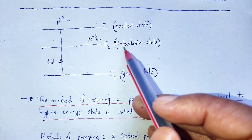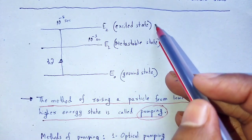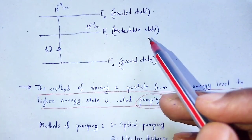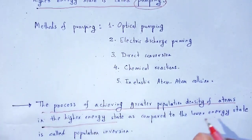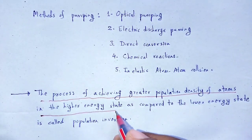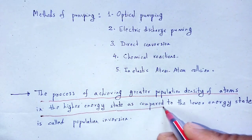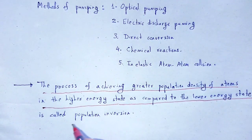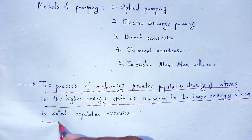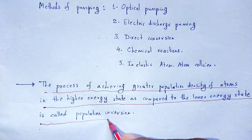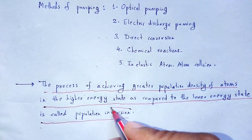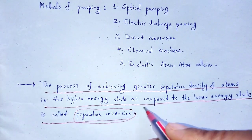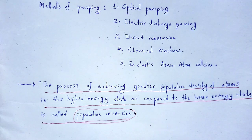The higher energy state refers to either the metastable state or the excited state, as compared to the lower energy state, which is the ground state. That phenomenon is known as population inversion.